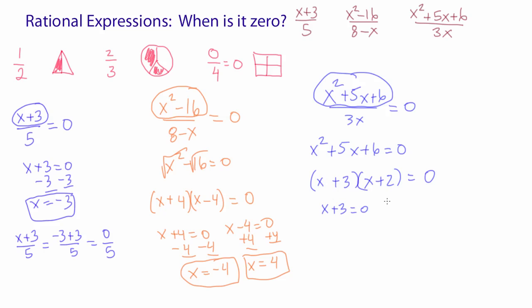Then we take each binomial, set it to zero. Subtract three on both sides: x equals negative three. And subtract two on both sides: x equals negative two. Here are my answers.